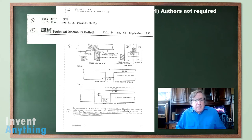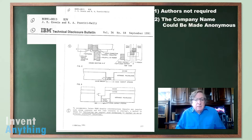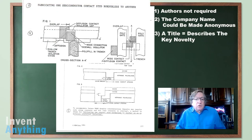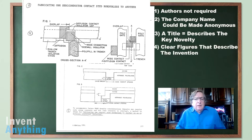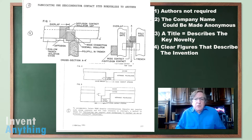Notice in section number one it has authors, but authors are not required. In section number two, you see the company name — again, that can be anonymous. Number three is a title, and notice that the title describes a key novelty of the invention. Always have a title where you can catch the eye of the examiner with a key novelty. The most important thing in this example is section number four: the figures — very detailed and labeled. As you develop your Enabled Publication, you almost start with the figures first, making sure they're detailed enough so that anyone skilled in the art would automatically know what you're doing. The more figures you have, the better.